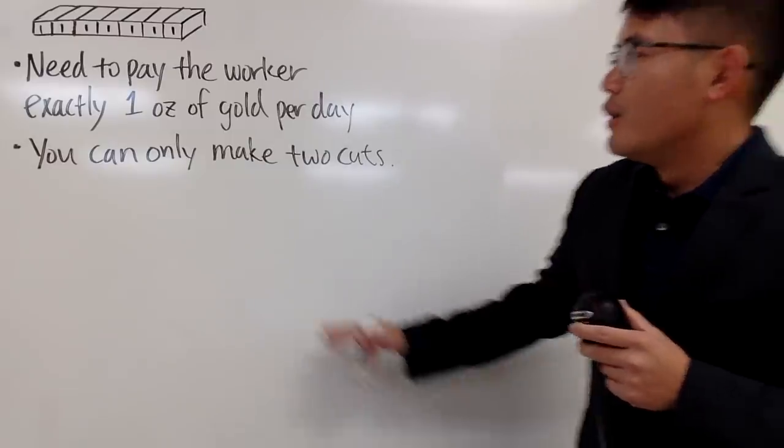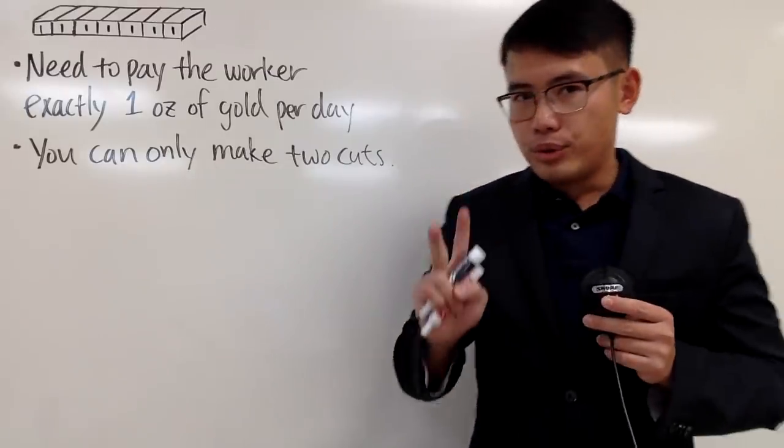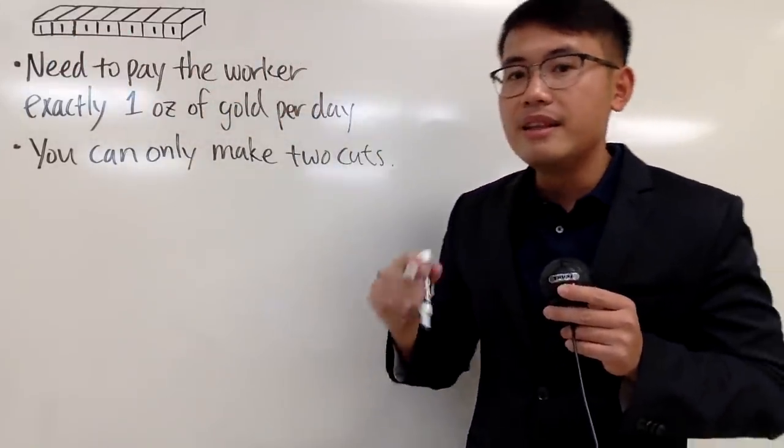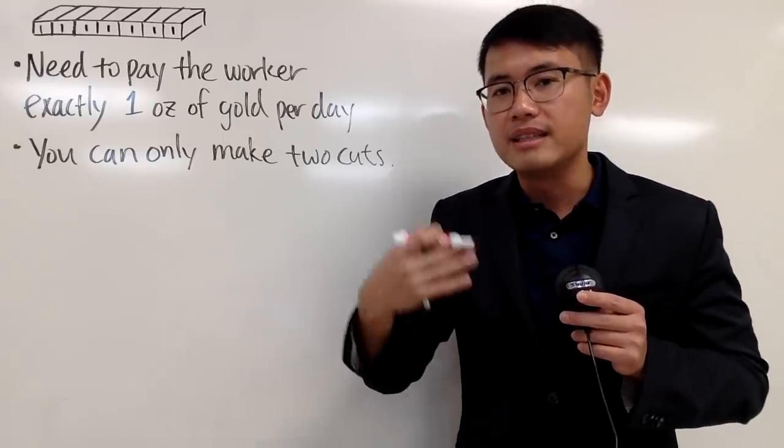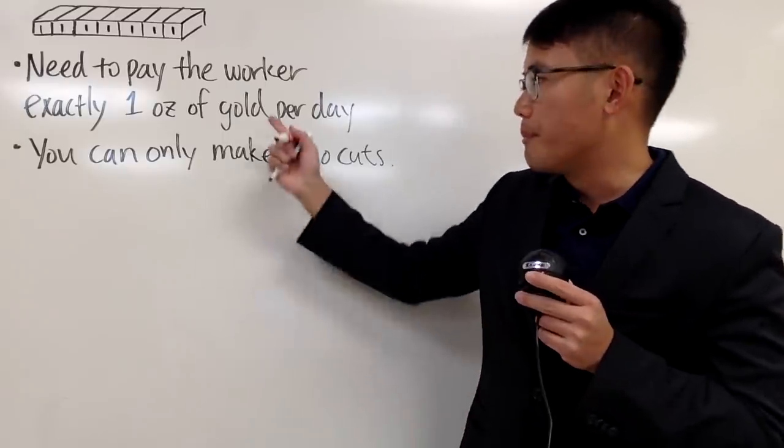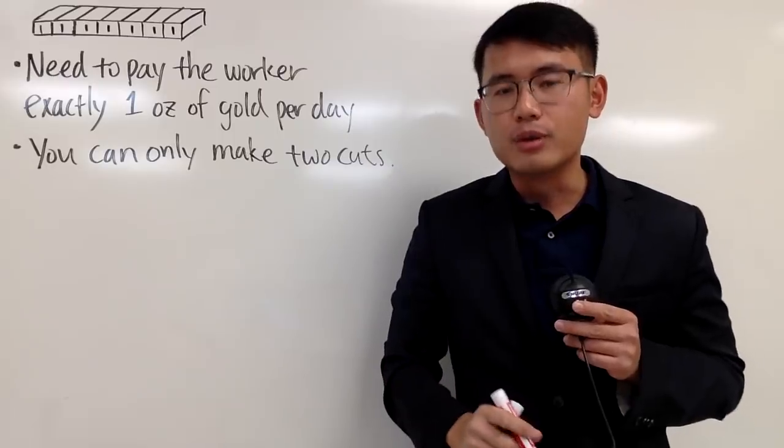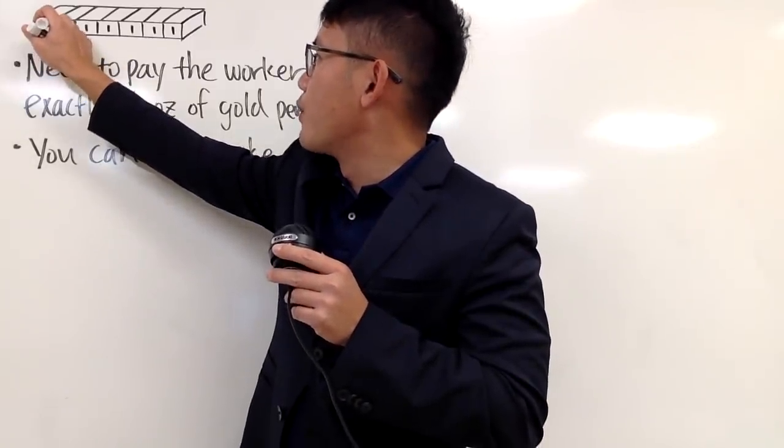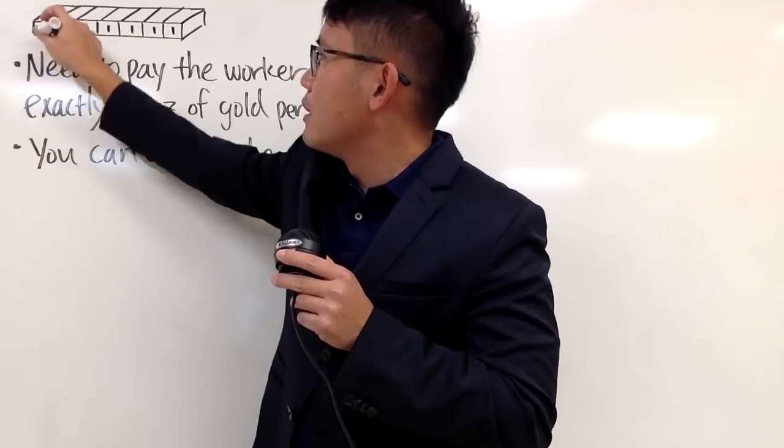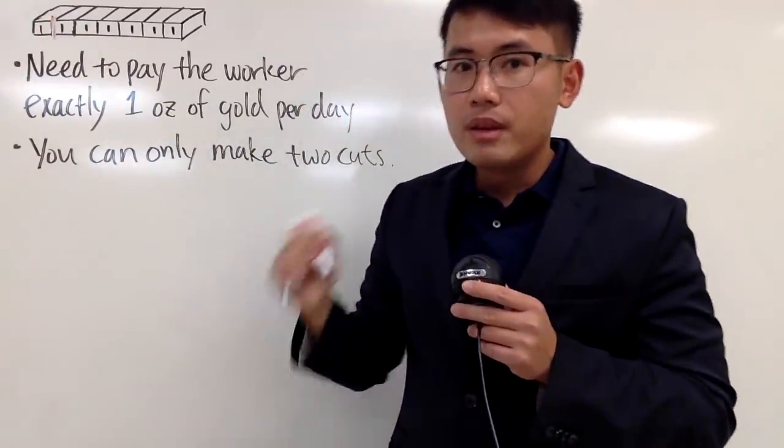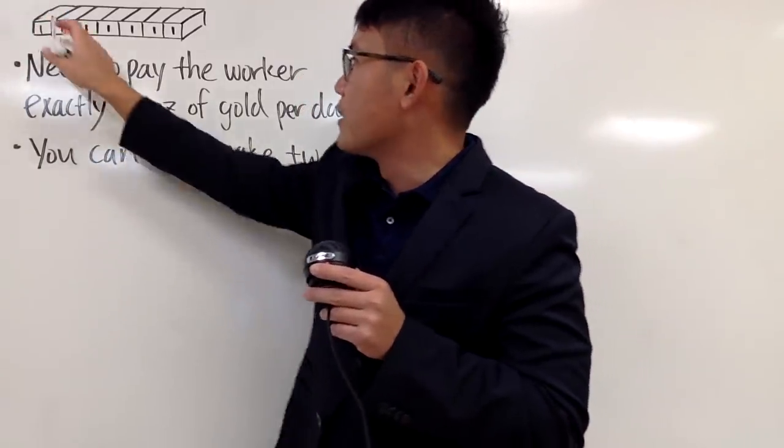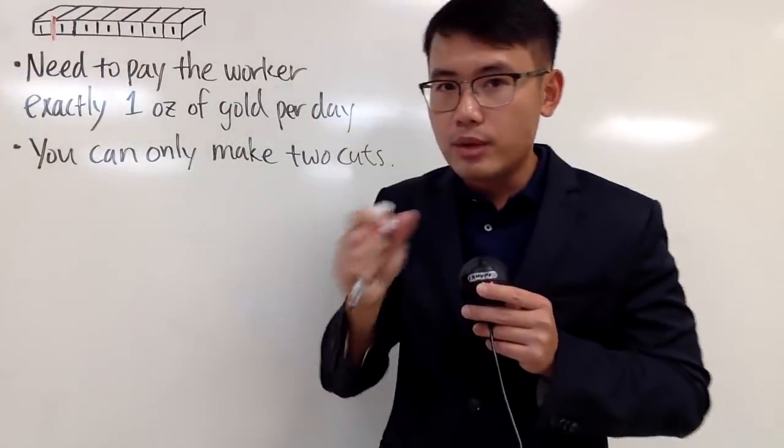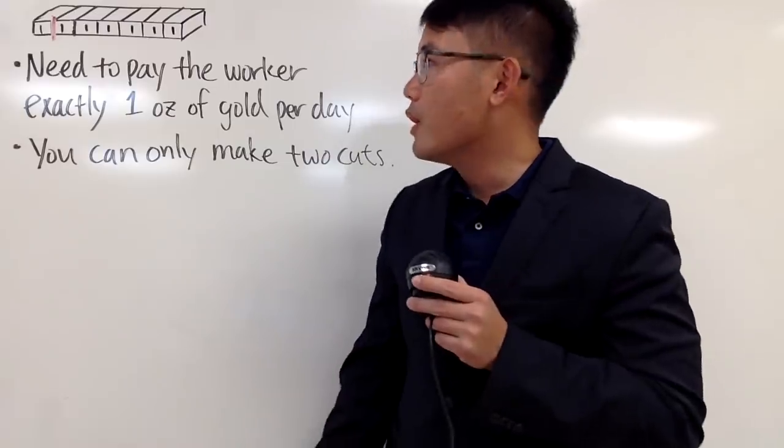Anyway, here is the solution. Right here, once again, you can only make two cuts. And notice we do have 1, 2, 3, 4, 5, 6, 7. And this is how we are going to make the cut. And this is how we are going to proceed so we can pay the worker 1 oz of the gold per day. We are going to make the cut right here. Of course, you have to give the worker the first ounce of the gold on the first day. So you have to make sure you cut the 1 oz, the bar with 1 oz.